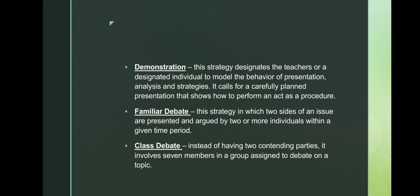The familiar debate is a strategy in which two sides of an issue are presented and argued by two or more individuals within a given time period. The class debate involves seven members in a group assigned to debate on a topic. The similarity between the familiar debate and class debate is that both always have an issue presented and argued by students. The difference is that in a familiar debate there are two groups or sides that argue the presented issue, while in the class debate seven members each have a time limit to discuss their sides.